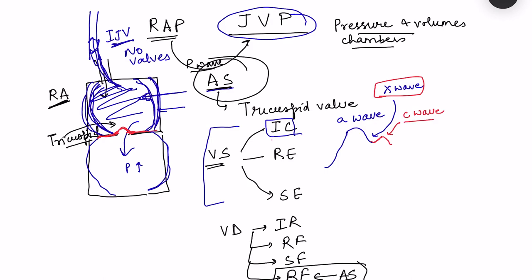After isovolumetric contraction, the pulmonary valve opens and blood starts flowing into the pulmonary artery — that is the rapid ejection phase and slow ejection phase. During ventricular systole, the atria are continuously relaxing, so the descent of the X wave resumes. There will be a fall in the pressure of the right atrium seen as a descent of the JVP. So the A wave is due to atrial systole, the C wave denotes that ventricular systole has started.